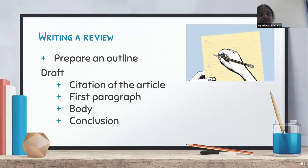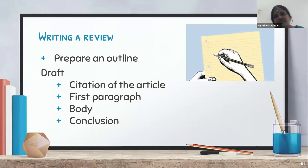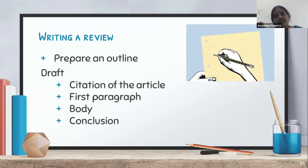Next is how to write a review. First, you prepare an outline of what is to be written — mental mapping or making an outline is very important for writing any article, whether it is a research article, concept paper, scientific paper, or a review report. Write the answers to all the questions aspect-wise and prepare an outline. Then make a draft — the draft should contain first the citation of the article being reviewed, the first paragraph as an introduction, and then the body contents.